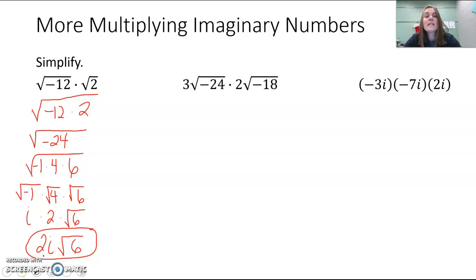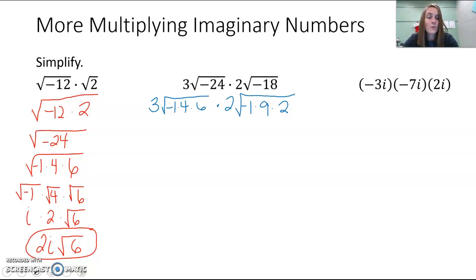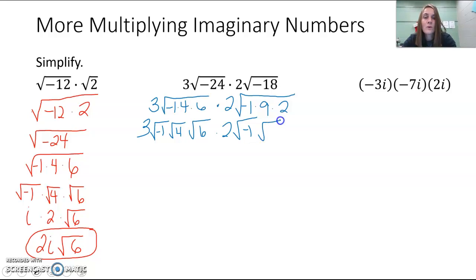For the next problem: 3a times √(-24) times 2 times √(-18). Let's simplify each square root separately first. Rewrite √(-24) as we just did: √(-1) times √4 times √6, keeping the 3 out front. Then for √(-18): 18 factors as 2 and 9, and 9 is a perfect square, so use 2 and 9. Breaking each into individual square roots, we get √(-1) · √4 · √6 for the first, and √(-1) · √9 · √2 for the second.